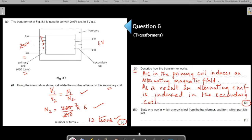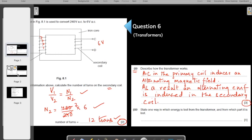Let us come to the third part. On the screen, state one way in which the energy is lost from the transformer and from which part it is lost. So one of the ways in which the energy is lost, you can say, is heat. Energy lost as heat from the wires of the transformer. Simple and easy. Alright. So that completes your part one of this question.